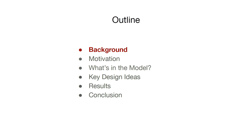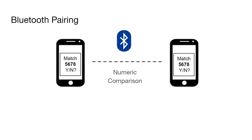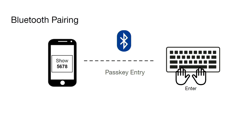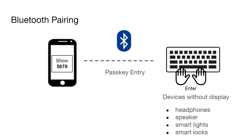Let's start with the background of Bluetooth. As you would usually see, any two devices trying to connect with Bluetooth would show a passcode on both devices, and the user can press yes and no prompts to finish the connection. Such pairing is called numeric comparison. In cases when one of the devices cannot show a display, the user can enter the displayed passcode, and such pairing is called passkey entry. There are plenty of such use cases, such as headphones and speakers.